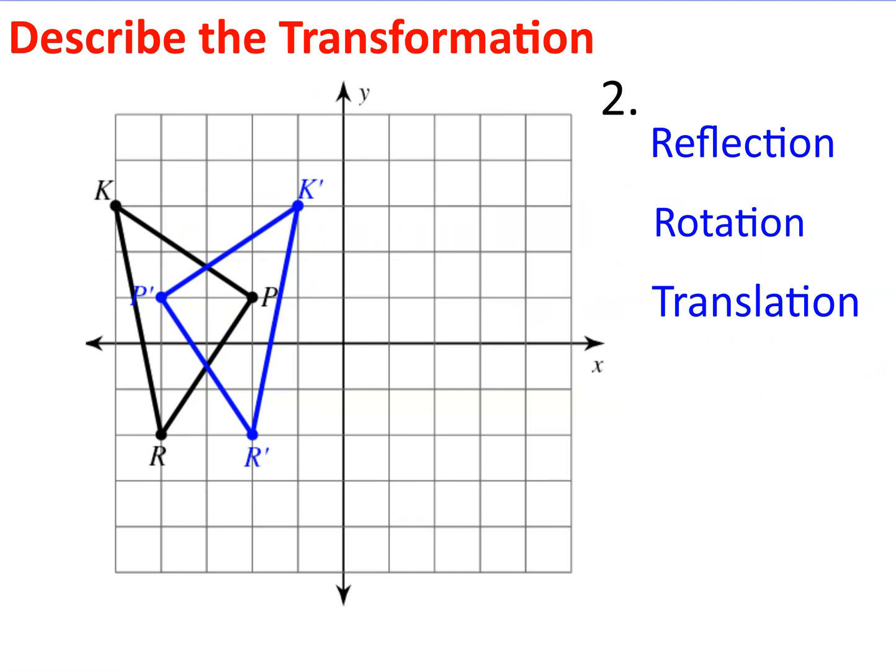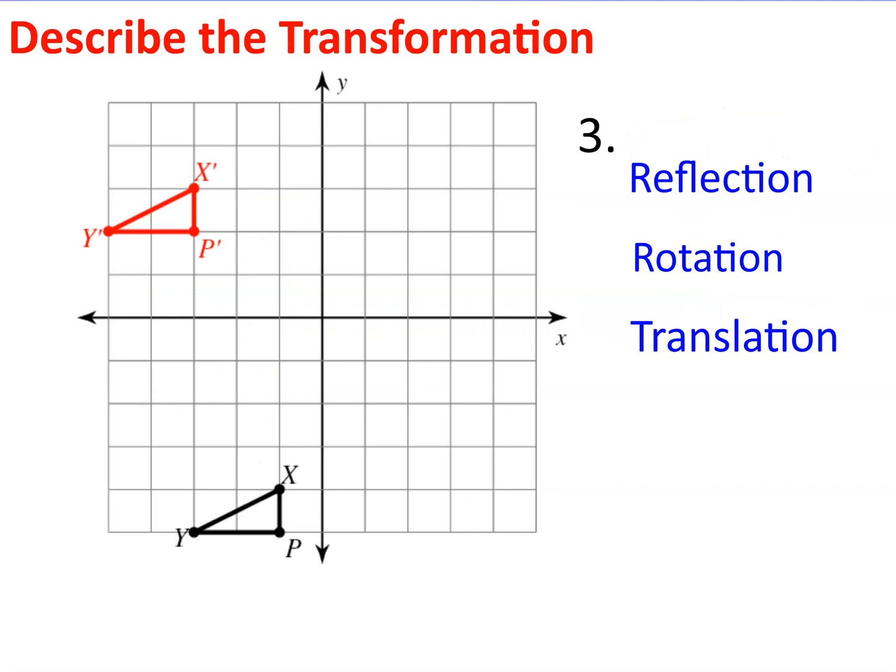How about number two? You can clearly see that letter P is over here on the right and letter P prime is over here on the left, so it definitely cannot be a translation. It has to be either reflection or rotation. When I draw my lines from corresponding part to corresponding part, when they're all parallel like this, that is a reflection. If it was a rotation, your lines would be going in different directions, maybe even crossing over each other. How about this one? If you're not sure, try the corresponding line test. X to X prime, P to P prime, Y to Y prime. That is a translation.